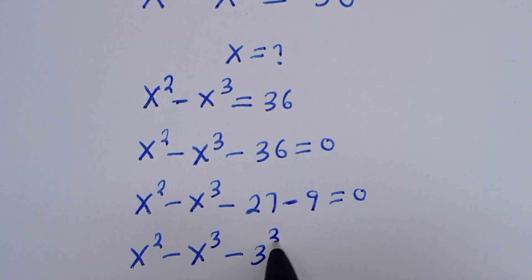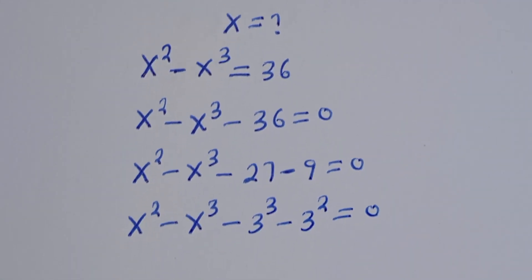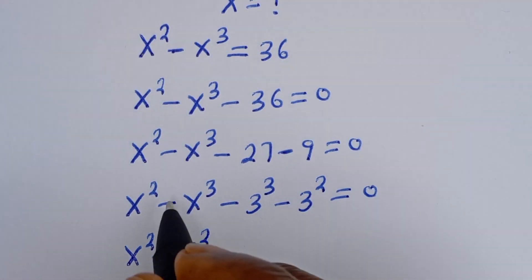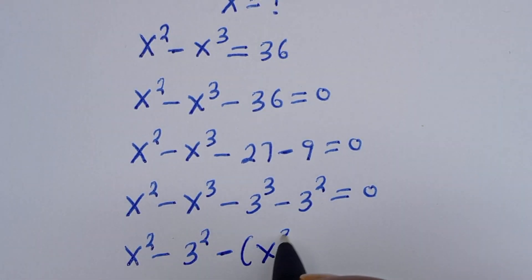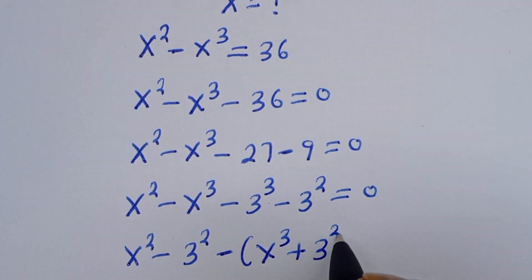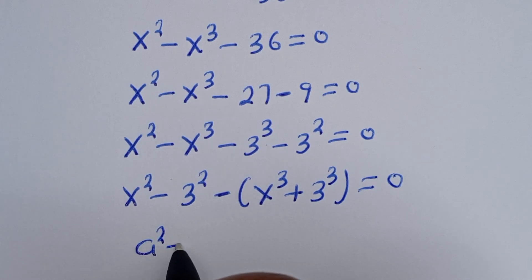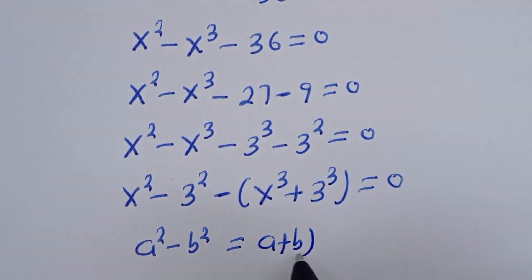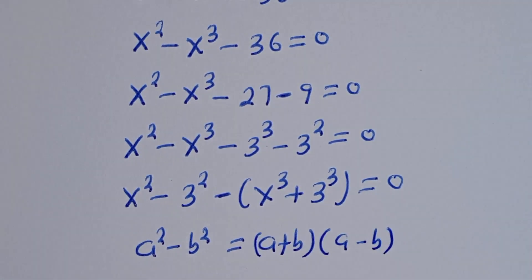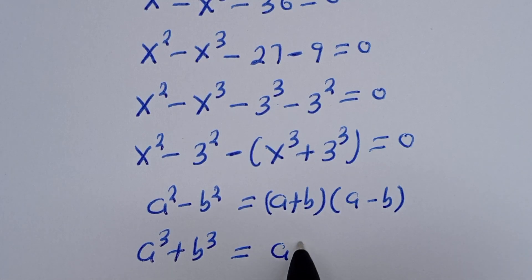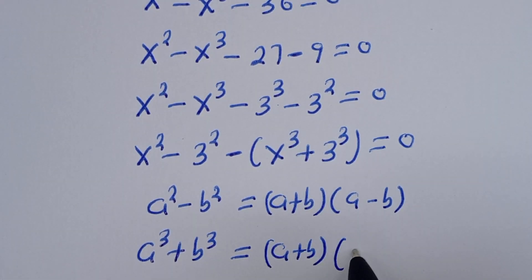Then this is s squared minus s to the power of 3 minus 27, which can be written as minus 3 to the power of 3, then minus 9 can be written as minus 3 squared, equal to zero. Comparing, we have s squared minus 3 squared, then minus bracket s to the power of 3 plus 3 to the power of 3, equal to zero. Note that a squared minus b squared equals a plus b times a minus b, and a cubed plus b cubed equals a plus b times a squared minus ab plus b squared.